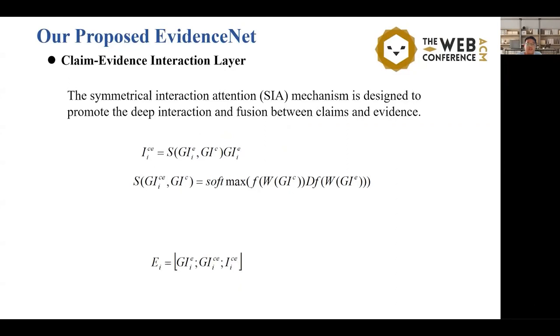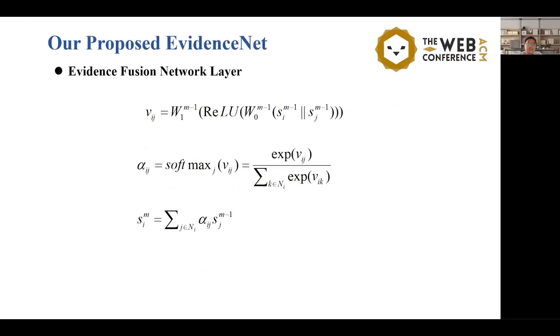In the evidence fusion network layer, we propose an evidence fusion network to distill the embeddings between evidence nodes. We first use the MLP to compute the coefficients of the attention weight between nodes i and its neighbor j. Then we normalize the coefficients using the softmax function. Finally, the linear combination of the neighboring nodes' features is created by multiplying the attention coefficients, and the feature of node i in layer m is then obtained.